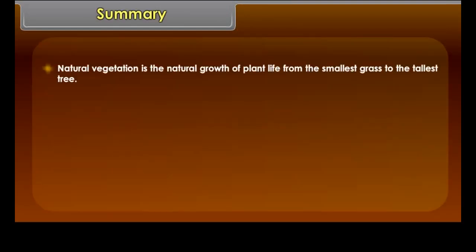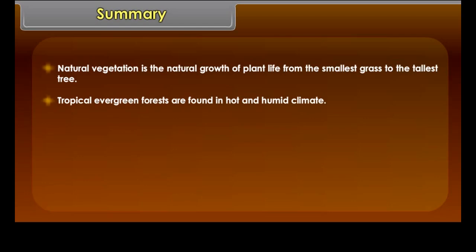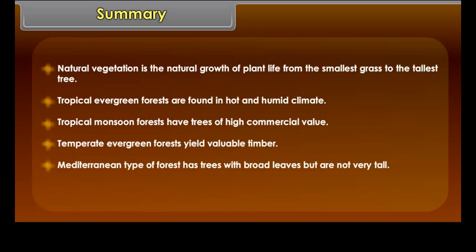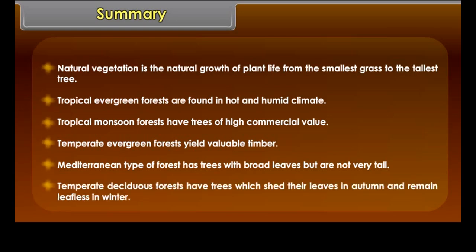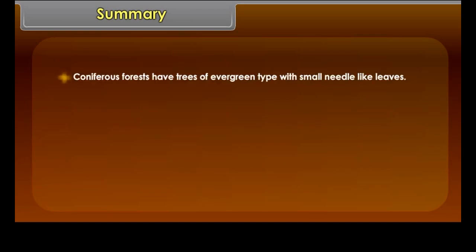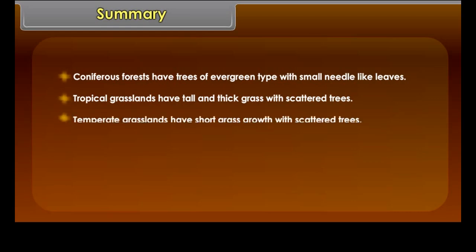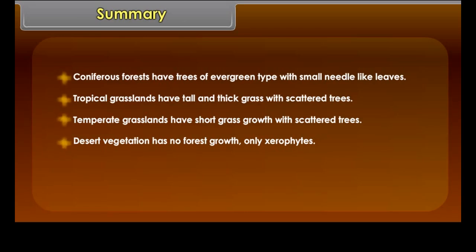Summary. Natural vegetation is the natural growth of plant life from the smallest grass to the tallest tree. Tropical evergreen forests are found in hot and humid climate. Tropical monsoon forests have trees of high commercial value. Temperate evergreen forests yield valuable timber. Mediterranean type of forest has trees with broad leaves but not very tall. Temperate deciduous forests have trees which shed their leaves in autumn and remain leafless in winter. Coniferous forests have trees of evergreen type with small needle-like leaves. Tropical grasslands have tall and thick grass with scattered trees. Temperate grasslands have short grass growth. Desert vegetation has no forest growth, only cacti. Tundra vegetation has short scattered plants and trees.